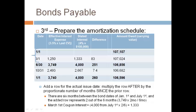Do the same for the October 31st row. The time passed between the last bond date on June 30th and October 31st is 4 months. Multiply the row after the October 31st row by 4/6 to get the numbers for the October 31st row. Please pause the video and rewrite the amortization table, recalculating the numbers on each row. You will need the amortization table with all the amounts to prepare the journal entries that we will do next.